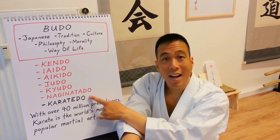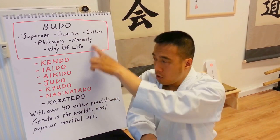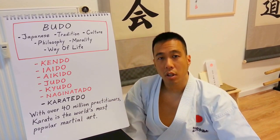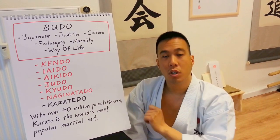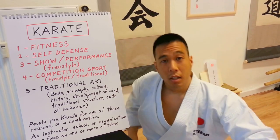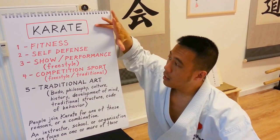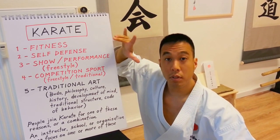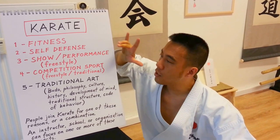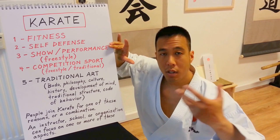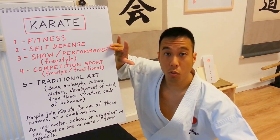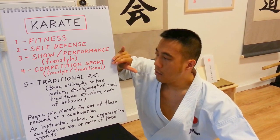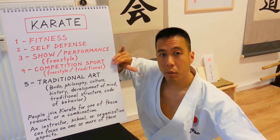Our branch of Budo is Karate-do. It is not only the largest of the Budo, but of all martial arts styles worldwide, karate is the largest, with over 40 million practitioners worldwide. Depending on the style, the instructor, and the club, it can mean different things. For some people it's a form of fitness, self-defense, or show performance mixing capoeira with parkour and breakdance — that's referred to as freestyle. It's also a competition sport for some, with freestyle competitions or traditional karate tournaments.